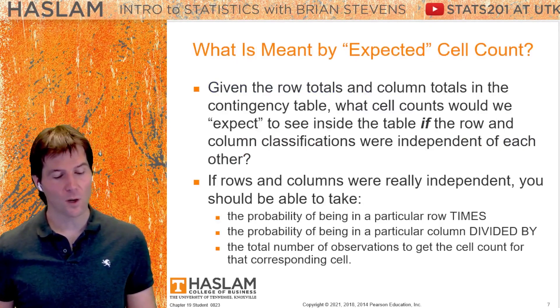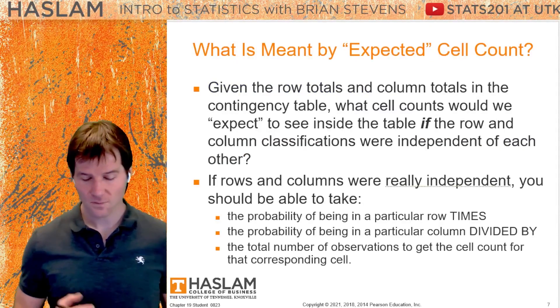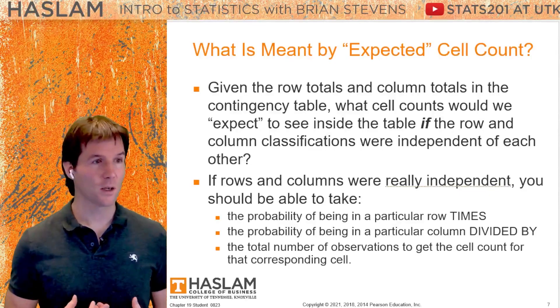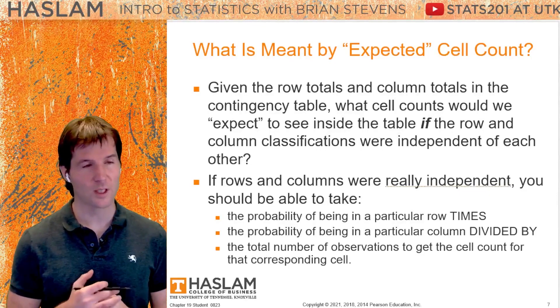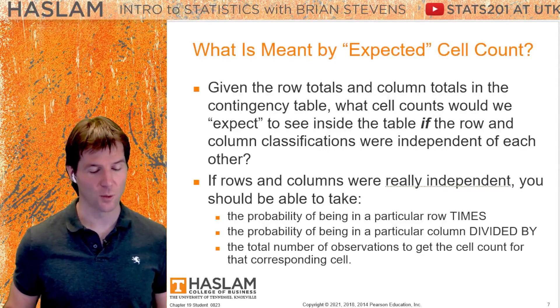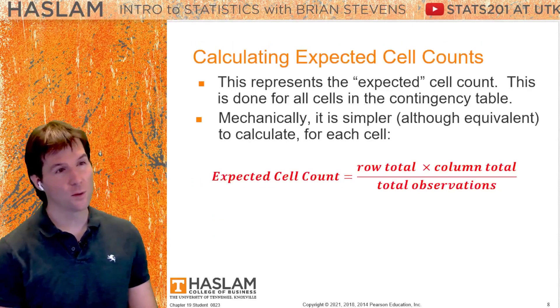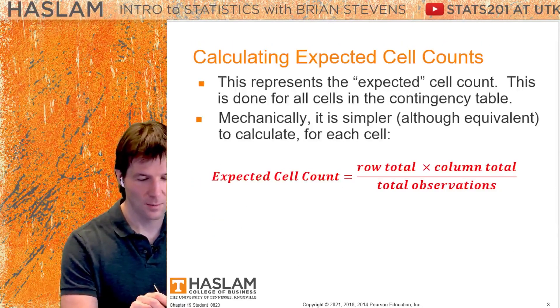What are these expected cell counts? After we check our four conditions, expected cell counts are how many individuals we would expect in a certain group. Here's the formula, but it's a lot easier than you think.